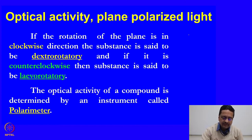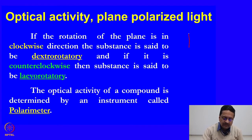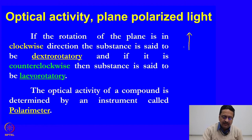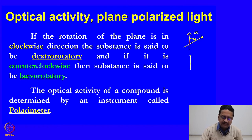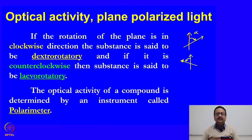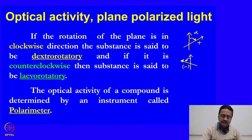If the plane of the incident radiation was in one direction and the rotated plane is in another direction rotating clockwise by angle alpha, this is called a dextrorotatory sample. If the plane was in one direction before passing through the sample and then rotates in the anticlockwise direction, we call it a levorotatory sample. By convention, dextrorotatory is termed plus rotation and levorotatory is termed minus rotation.